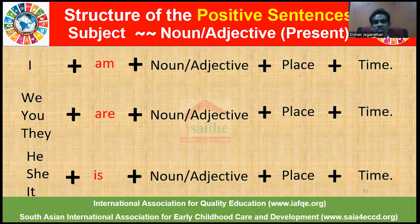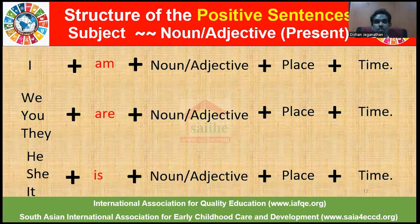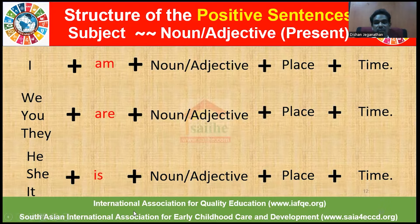The structure of positive sentences is as follows: I, followed by am, plus noun or adjective, plus place and time. We, you, they, plus are, plus noun, plus an adjective, plus place and time. He, she, it, plus is, plus noun or adjective, plus place and time.